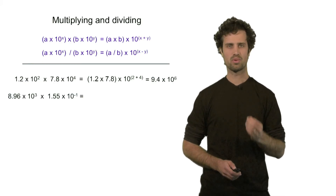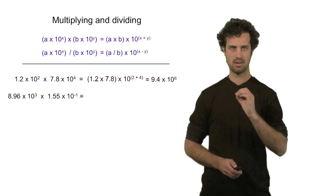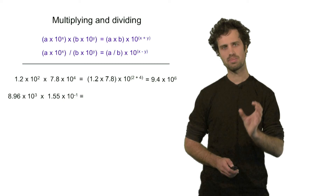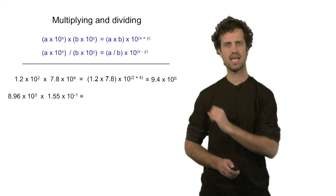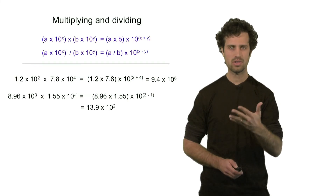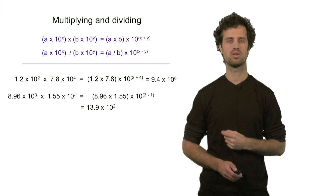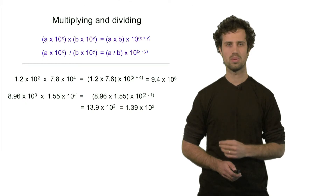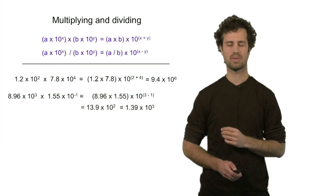Another example: 8.96 times 10 to the power 3, times 1.55 times 10 to the power minus 1. In this case the powers are very different — one is positive and the other is negative. You just apply the same rule: multiply the two numbers, and add up the two powers. 3 plus minus 1 equals 3 minus 1, which is 2. So the answer is 13.9 times 10 to the power 2. In proper scientific notation, we move the decimal point one position, giving 1.39 times 10 to the power 3.